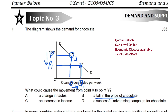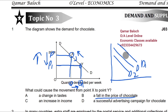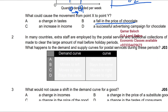Whenever there is movement along the same demand curve, it is caused by a change in price. If movement is from Y to X, it is known as contraction in demand, caused by a rise in price. Since movement here is from X to Y, we pick Option B — fall in price of chocolate. All other options are demand shifters, meaning changes in non-price factors cause the curve to shift left or right.